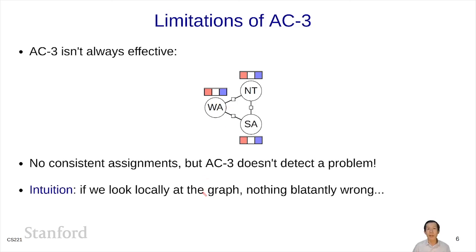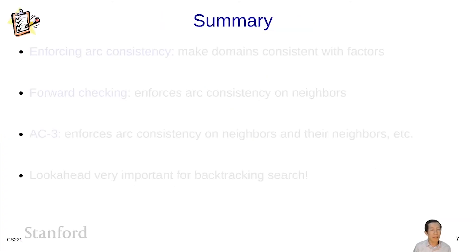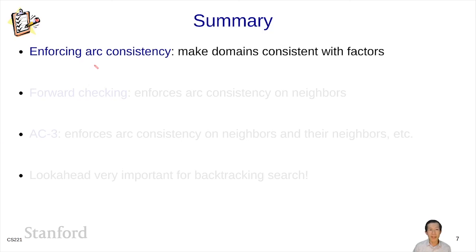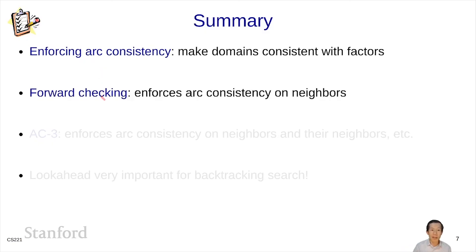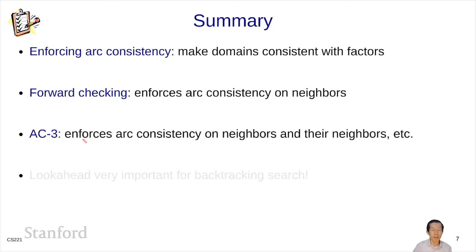The intuition is that AC3, and in general R-consistency, only looks locally at the graph. It only detects problems that are blatantly wrong and can be detected locally. You can't avoid exhaustive search to detect the deeper problems. Enforcing R-consistency is a way to take what you know about one variable's domain and propagate that information via the factors to reduce the domains of its neighbors. Forward checking only applies R-consistency to immediate neighbors. AC3 takes that to the extreme and enforces R-consistency on neighbors, their neighbors, and so on until convergence, trying to eliminate as many values from the domains as possible.